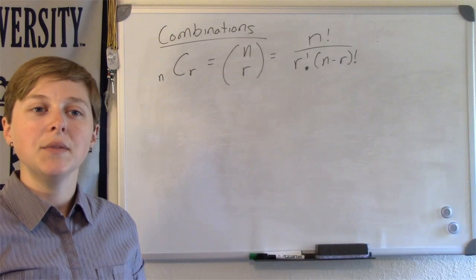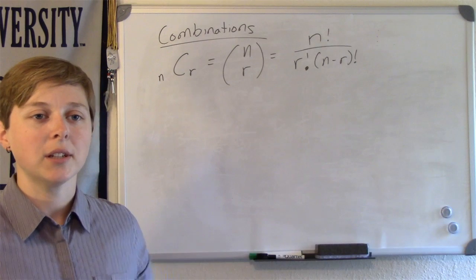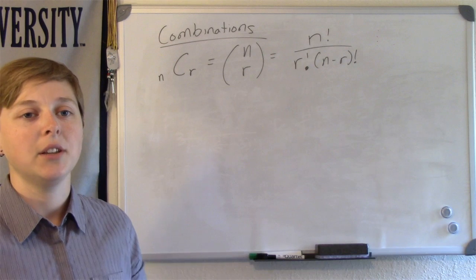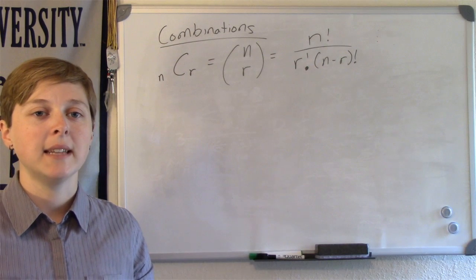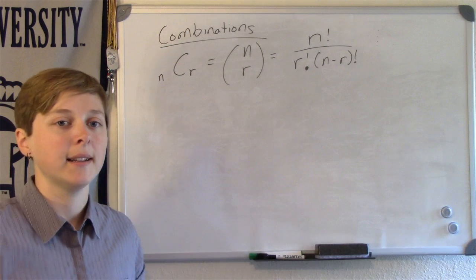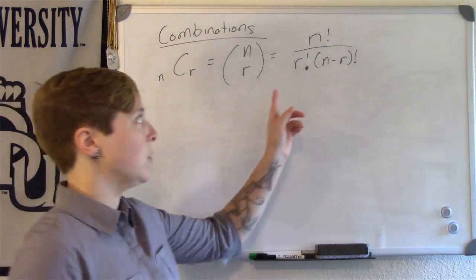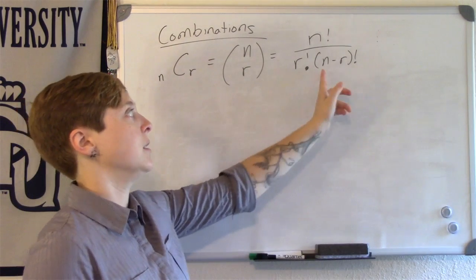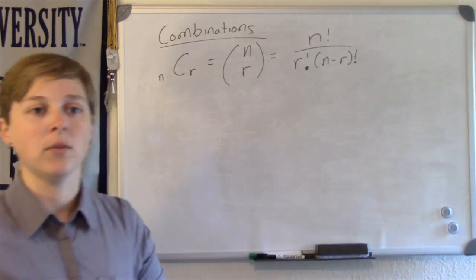In this video, I want to discuss combinations. The number of combinations of n distinct objects taken r at a time is n factorial divided by r factorial times n minus r factorial.